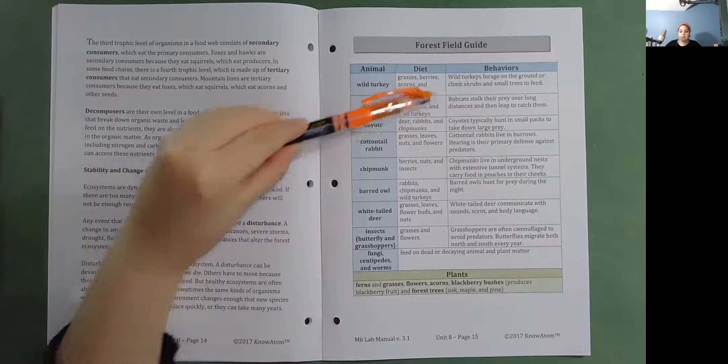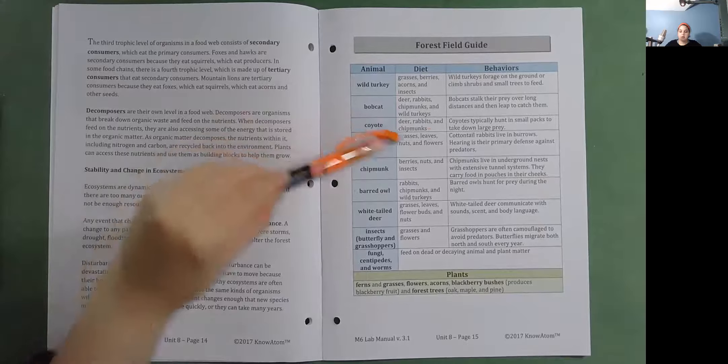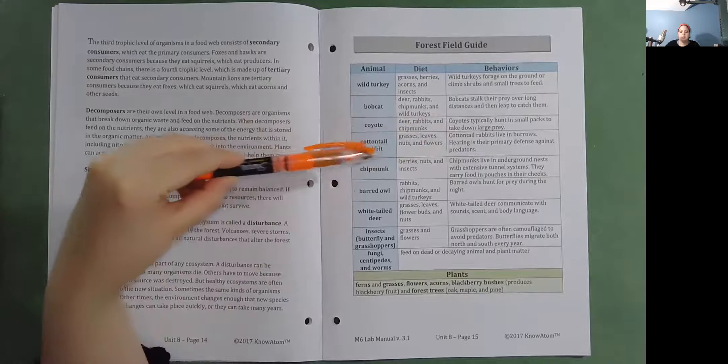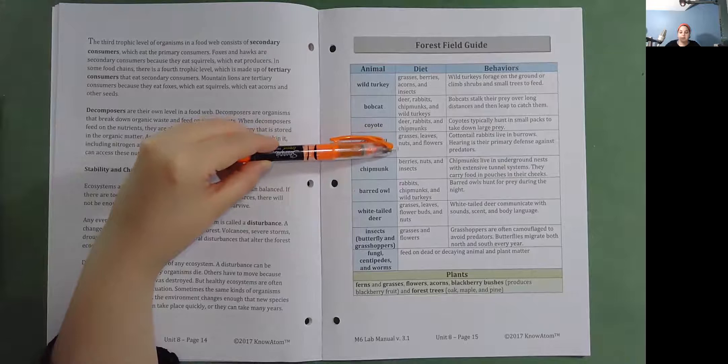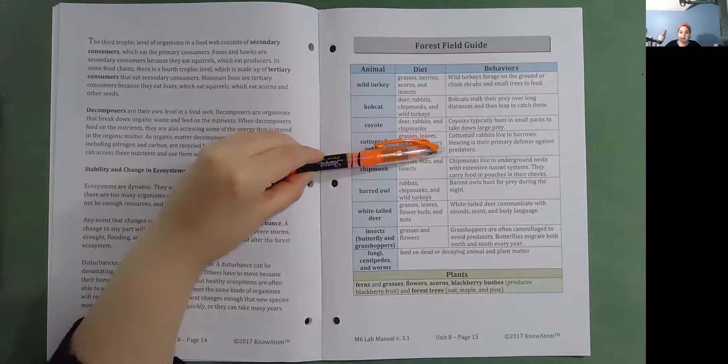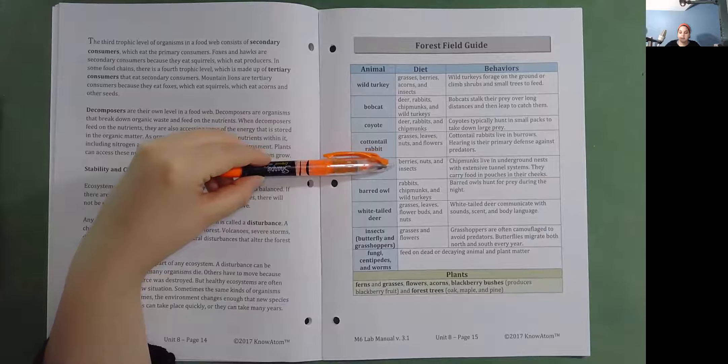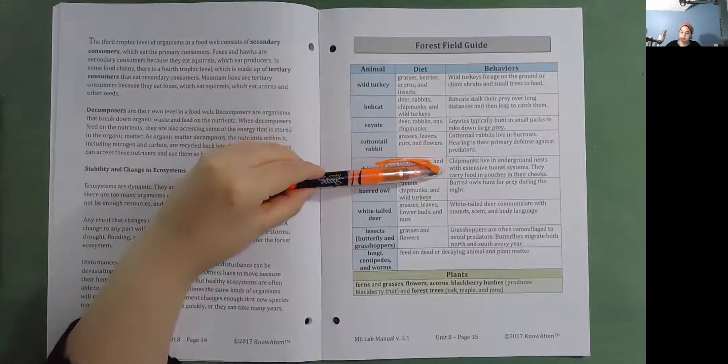Coyote. Eat deer, rabbits, and chipmunks. Coyotes typically hunt in small packs to take down large prey. Cottontail rabbit. Eat grasses, leaves, nuts, and flowers. Cottontail rabbits live in burrows. Hearing is their primary defense against predators. Chipmunk. Eats berries, nuts, and insects. Chipmunks live in underground nests with extensive tunnel systems. They carry food in pouches in their cheeks.